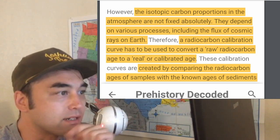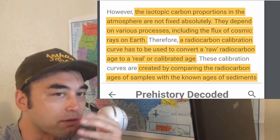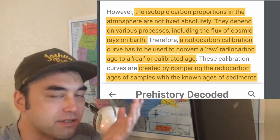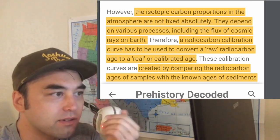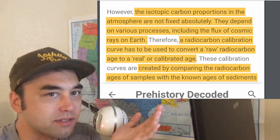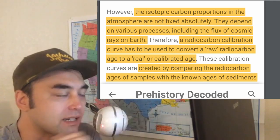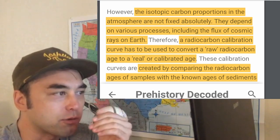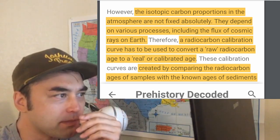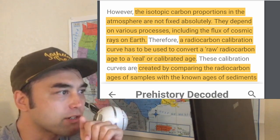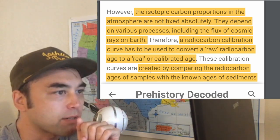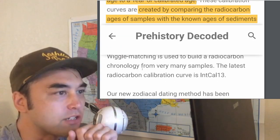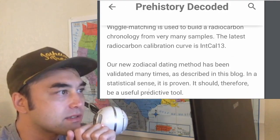These curves do increase the accuracy, but still, anything beyond a certain point is not reliable. These calibration curves are created by comparing the radiocarbon ages of samples with the known ages of sediments.